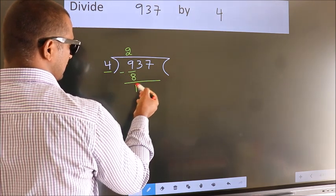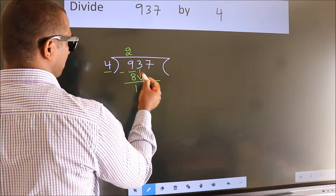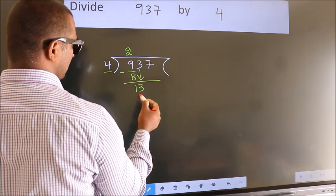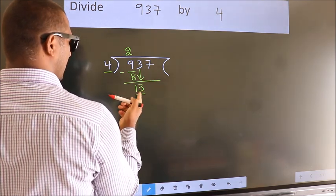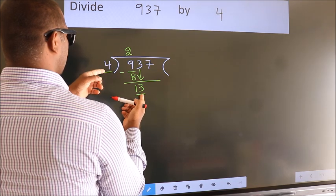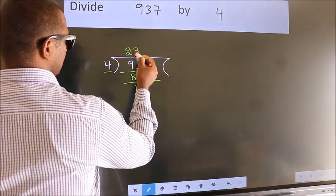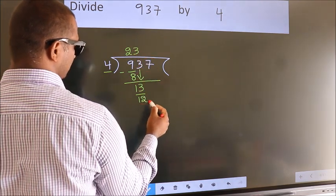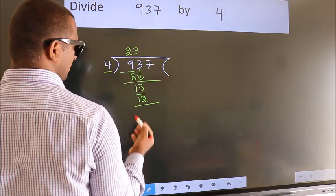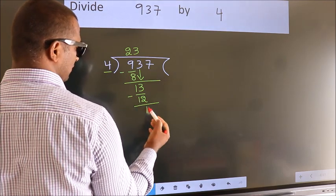After this, bring down the beside number. So, 3 down. So, 13. A number close to 13 in 4 table is 4 threes, 12. Now, we subtract. We get 1.